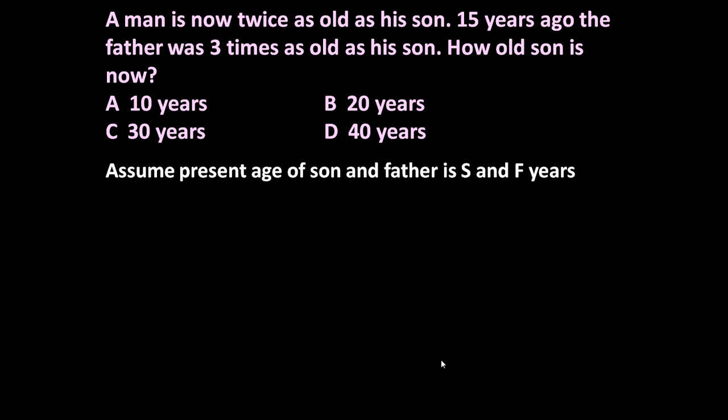So now the first statement is, a man is now twice as old as his son. It means F is equal to 2S. Father is twice as old as his son. Because son age is S, father's age F equals 2S. This we call equation number 1.